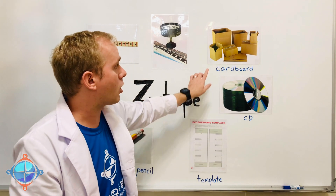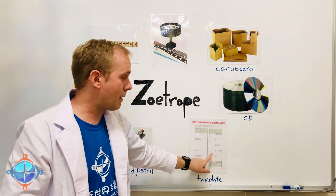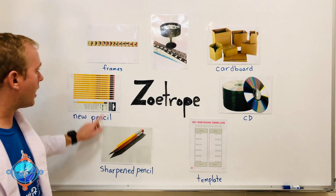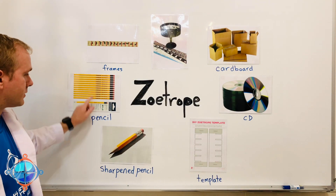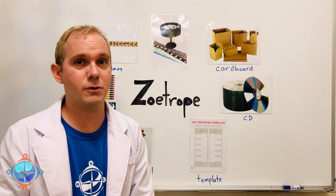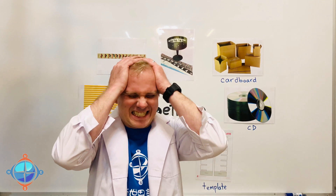To make our zoetrope today, there's only a few things you'll need at home. We'll need some cardboard, a CD, a template, some glue, and two kinds of pencils — a sharpened pencil and a new pencil for the bottom of your zoetrope. Are you ready to see how it's done? Teacher Marius, we forgot the glue again!